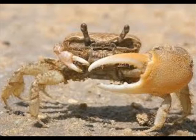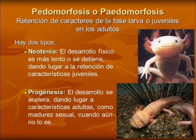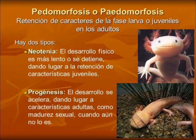The first is pedomorphosis, which is when the descendant retains juvenile characteristics of the predecessor. Within this we can highlight progenesis, which is the acceleration of the development of the germinal line of the descendant — meaning more development of sexual characters. There is also neotenia, which is the slowing of the somatic development of the descendant; they are capable of reproducing but their appearance remains juvenile. A well-known example is the axolotl, which retains very juvenile characters while being perfectly capable of reproducing.